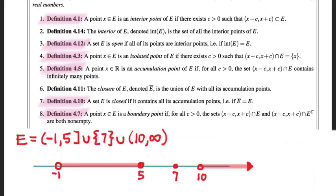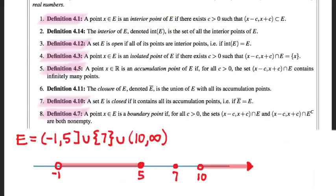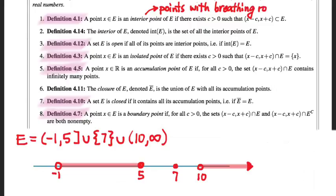Let's start with what I believe to be the most important one of them all — the interior points. A point is an interior point if there exists a c, a positive number c, such that the open interval from x minus c to x plus c is all contained within the set E. I like to think of interior points as points that have breathing room — points that can stretch out their arms and remain inside the set.